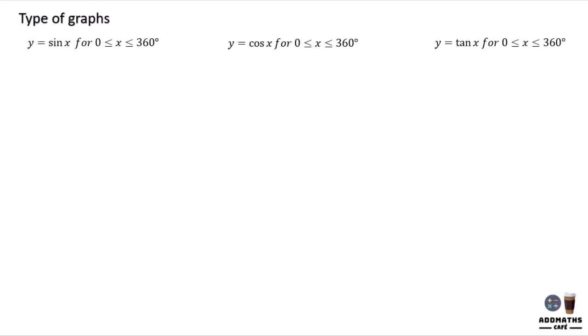Types of graphs. There are a lot of types of graphs, and these are the examples. So let's say you are required to sketch y equal to sin x. The graph will be this type. Draw the y-axis and x-axis.